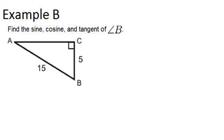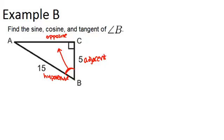In example B, we're doing something similar — again finding the sine, cosine, and tangent ratios for angle B. From angle B, the first thing we want to do is label our sides. The opposite side is unlabeled, the 15 is the hypotenuse, and the 5 is the adjacent side. Just like last time, we will need to solve for our opposite side using the Pythagorean theorem in order to figure out all three ratios.